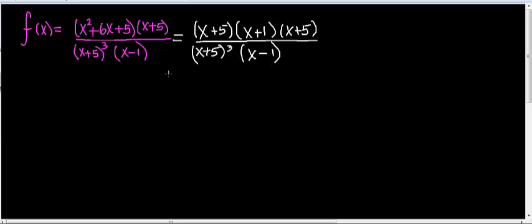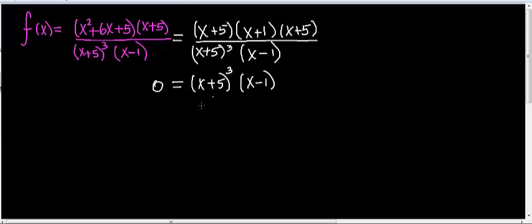First, set the denominator equal to zero. You can use either form of the denominator — in this case they're equivalent. So we set (x plus 5) cubed times (x minus 1) equal to zero. Using the zero products property, this tells me that x equals negative 5.